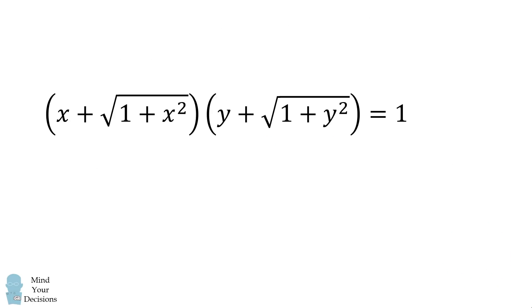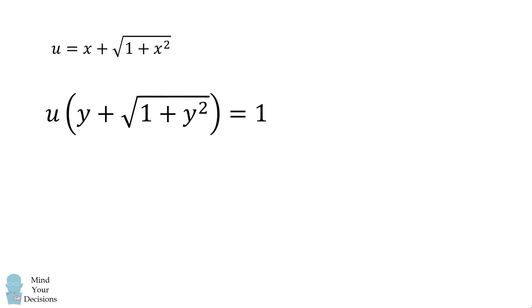We will solve this equation by writing an expression for y in terms of x. To get started, suppose u is equal to x plus the square root of 1 plus x squared. We will substitute that in. We will then divide both sides by u and then subtract y from both sides of the equation.